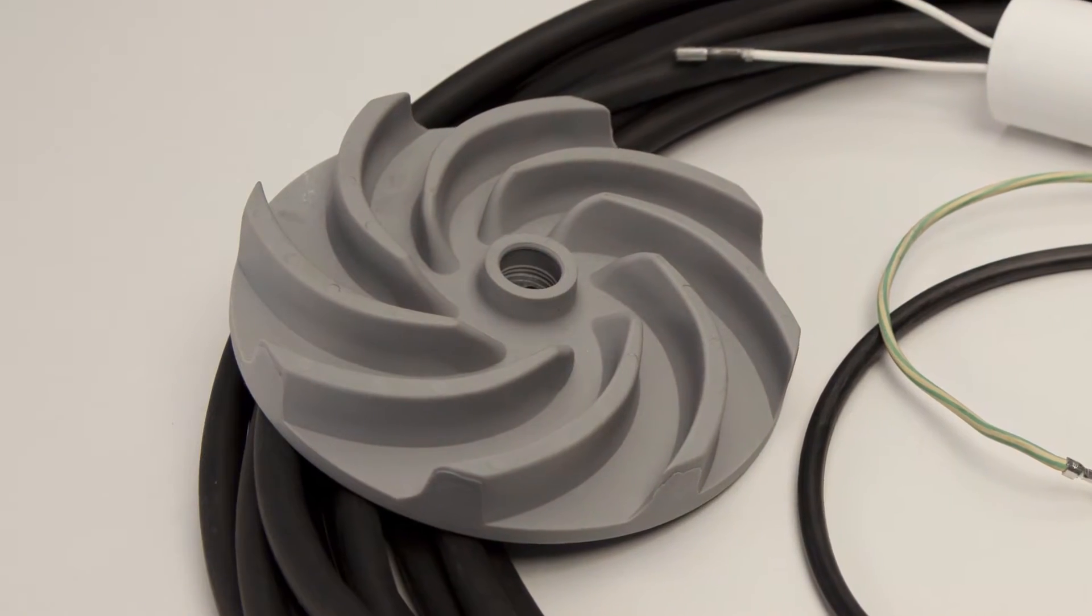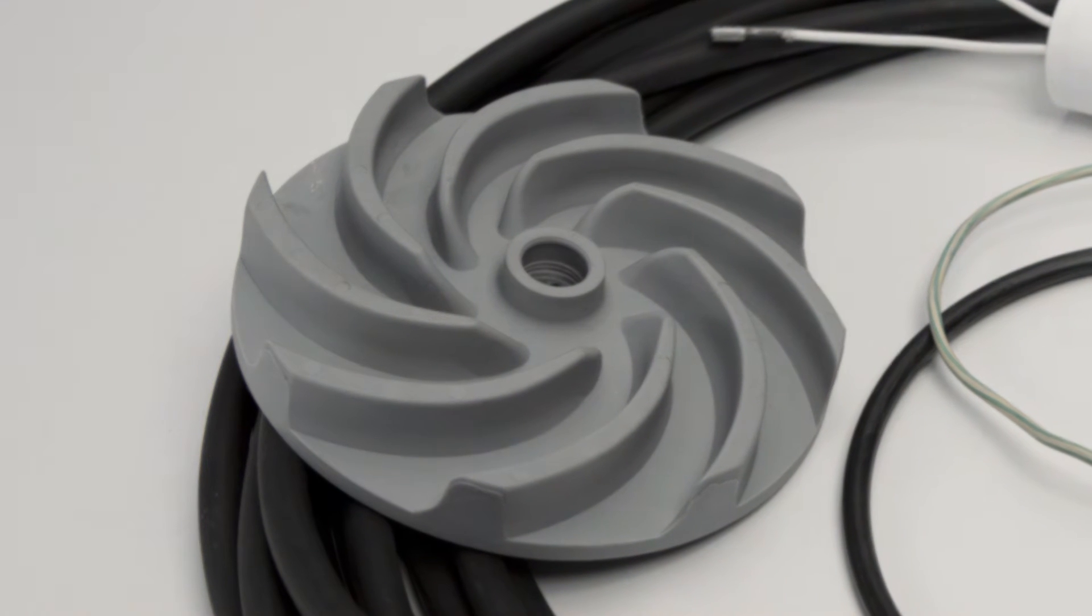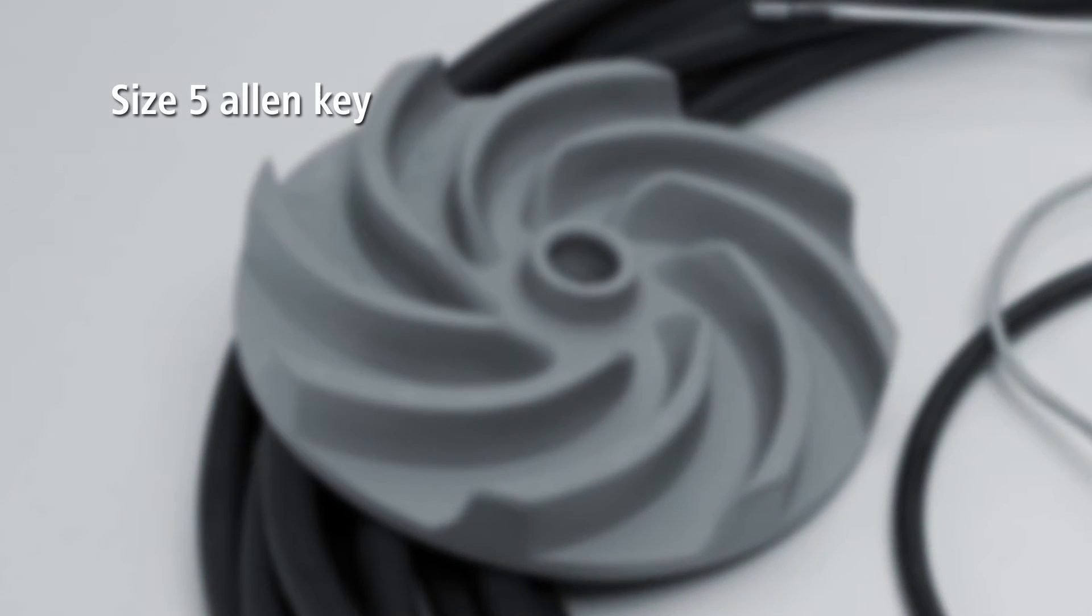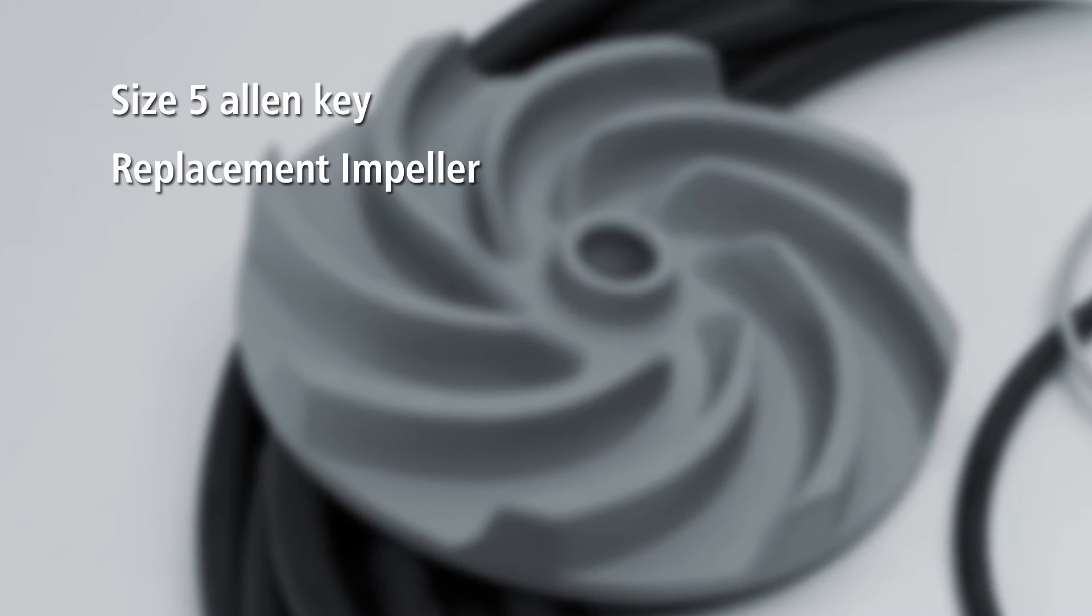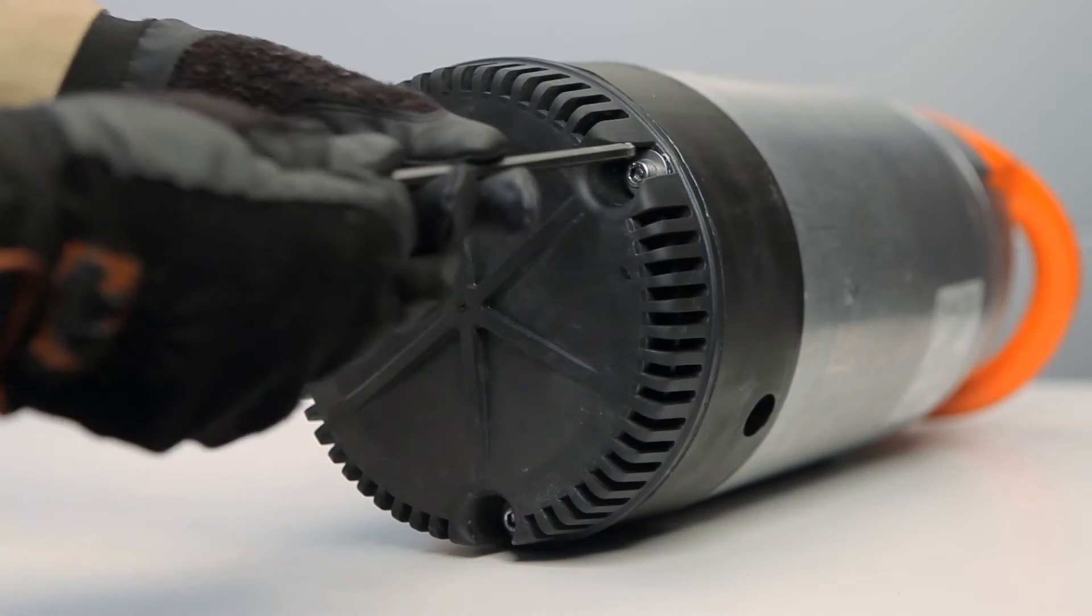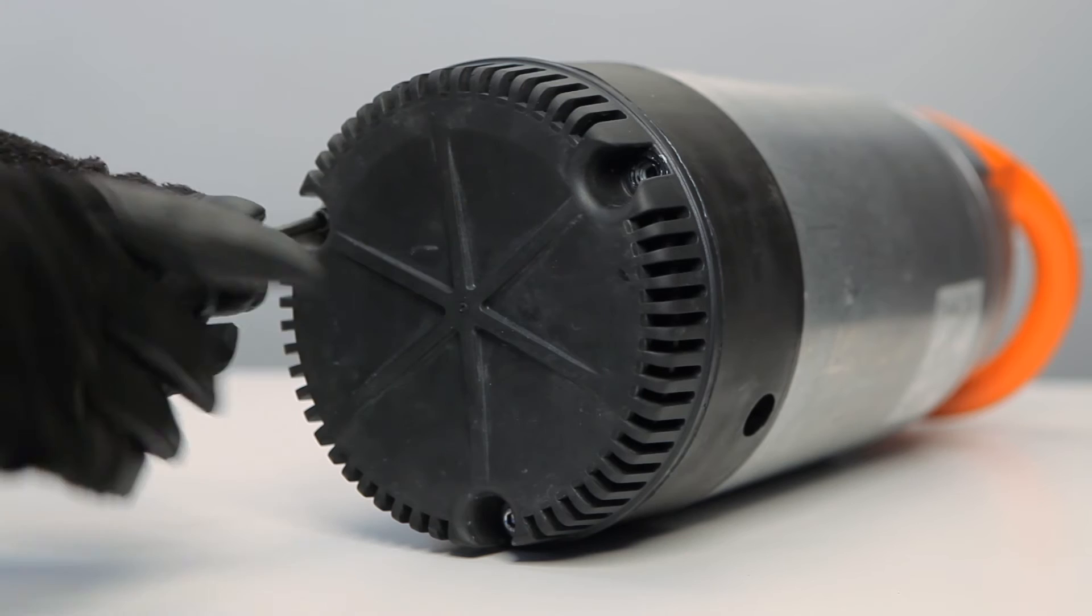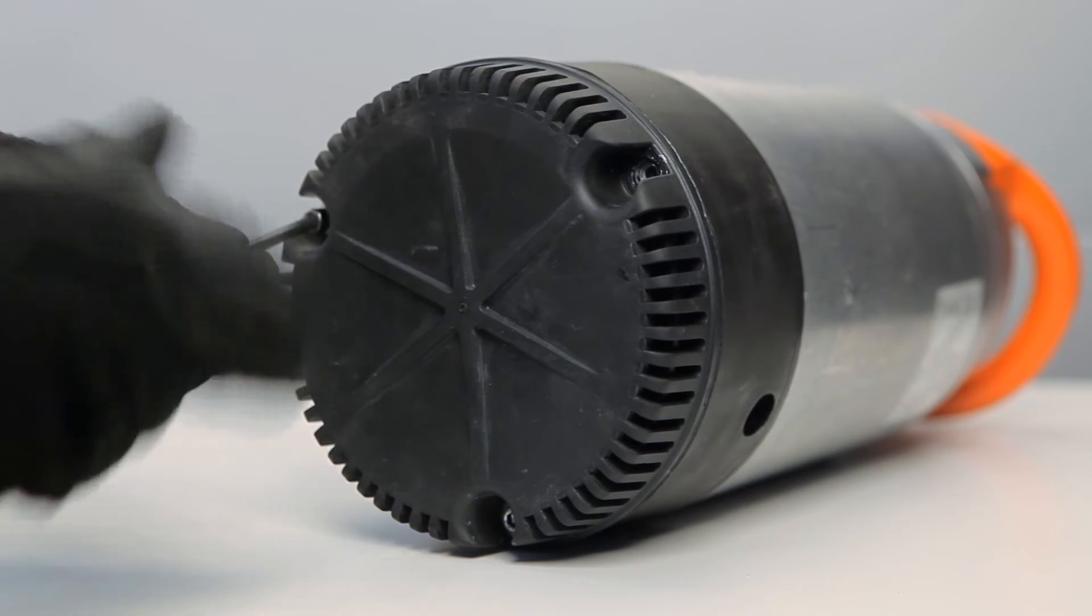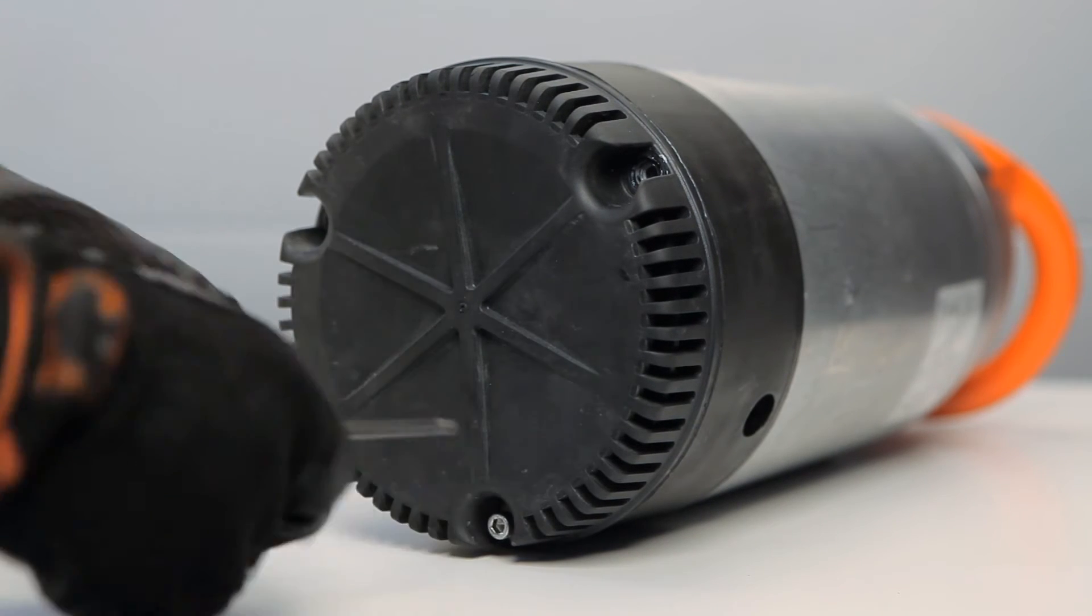Should the impeller become worn or damaged, you'll need to replace it. This task requires a size 5 Allen key and a replacement impeller. Remove the 3 strainer bolts on the base of the pump using the Allen key, and remove the strainer.